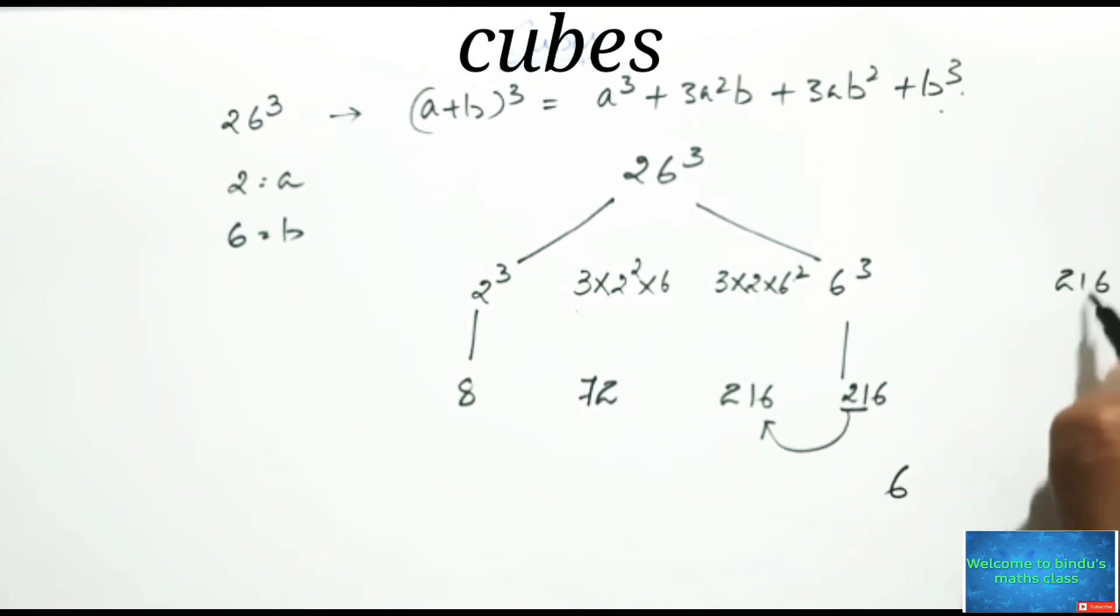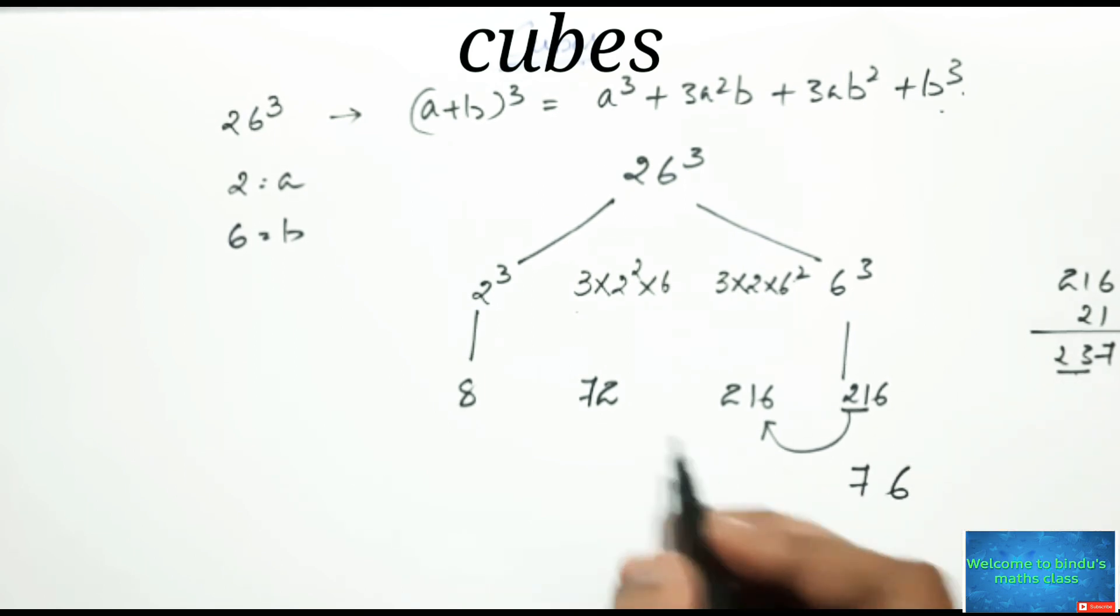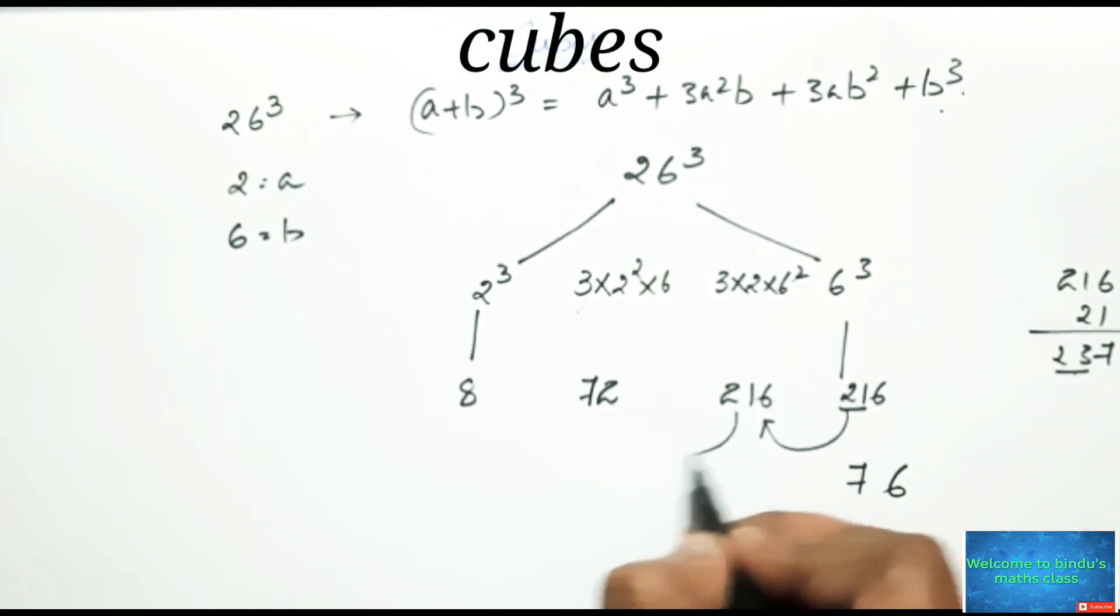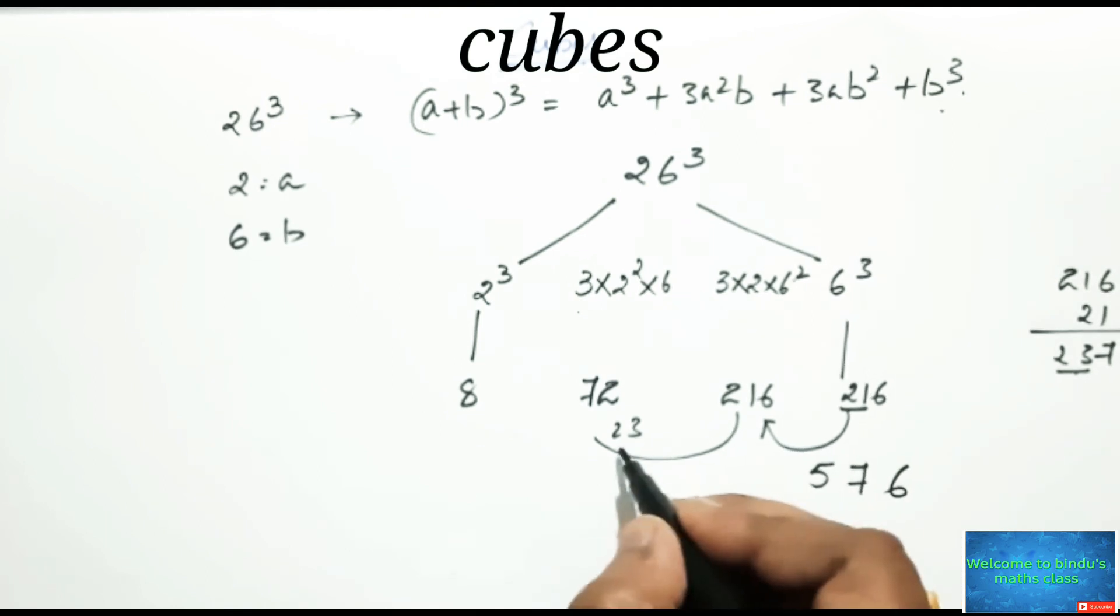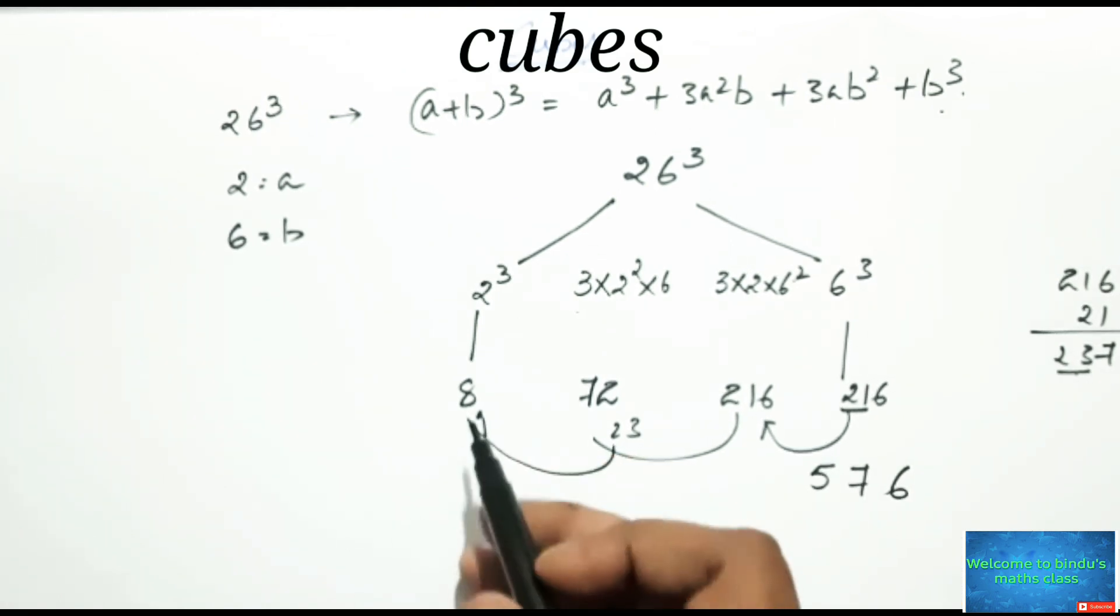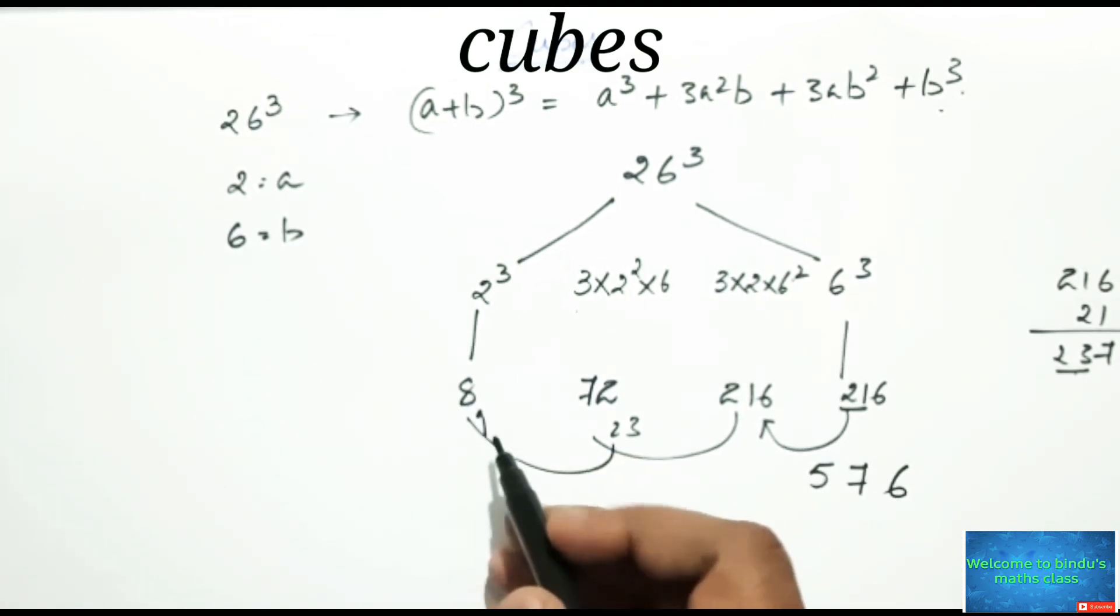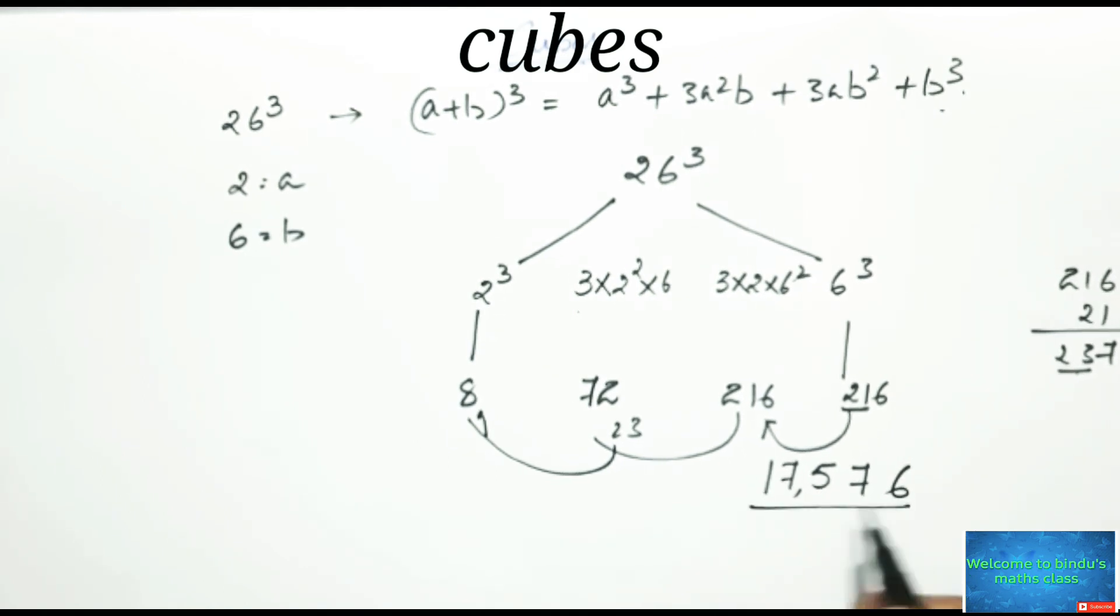Please write down 7 here and again this 23 will be carry forward to this place. 72 plus 23 that is 95, write down 5 here and 9 will be carry forward here, and 8 plus 9 that is 17, so 17576.